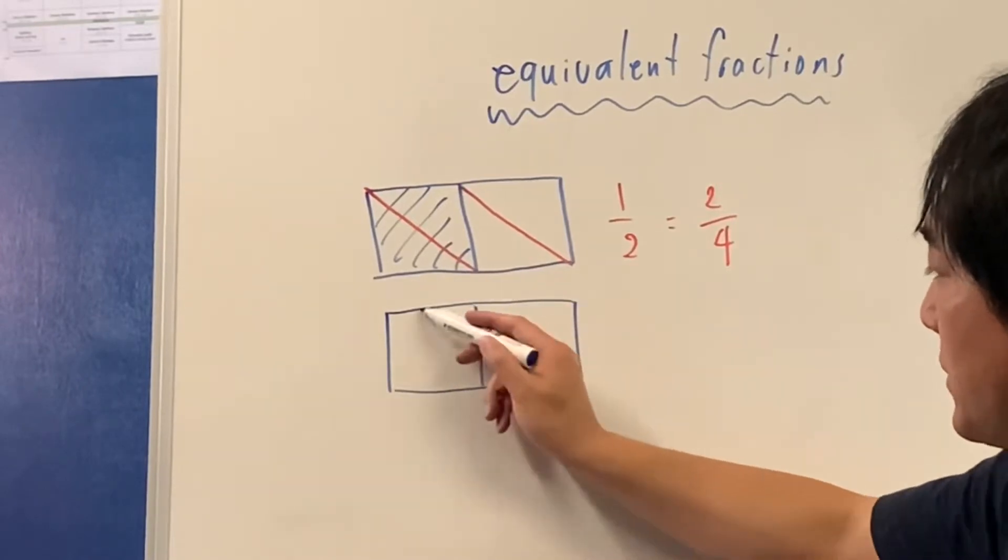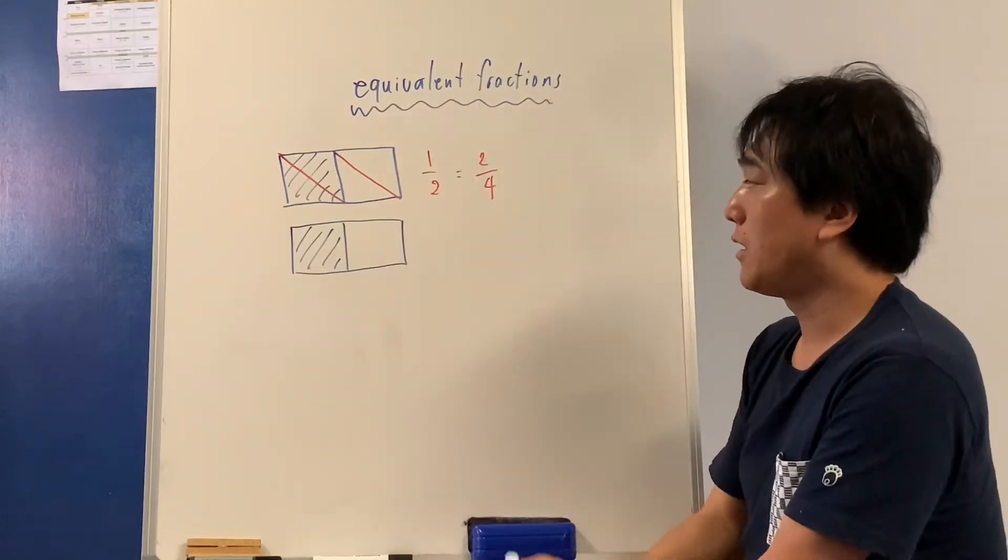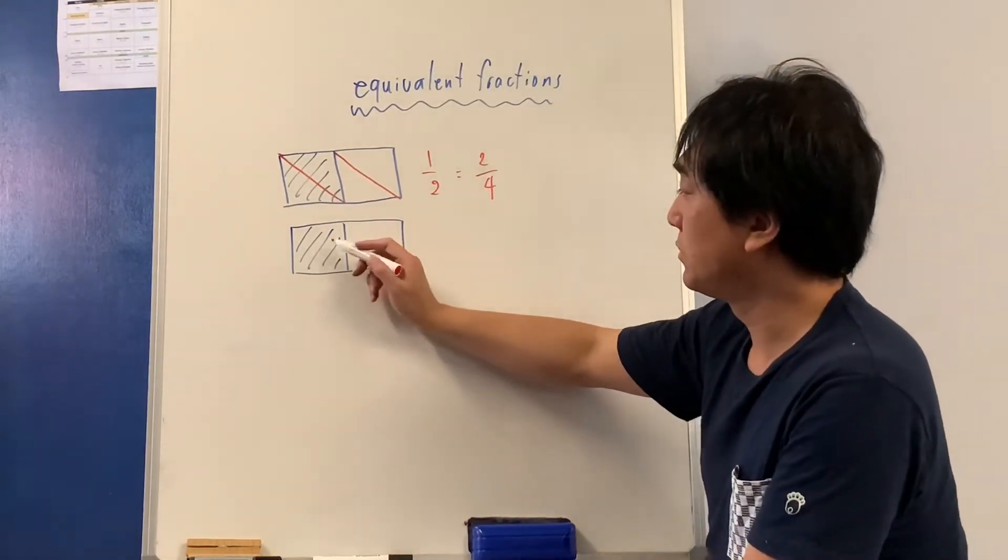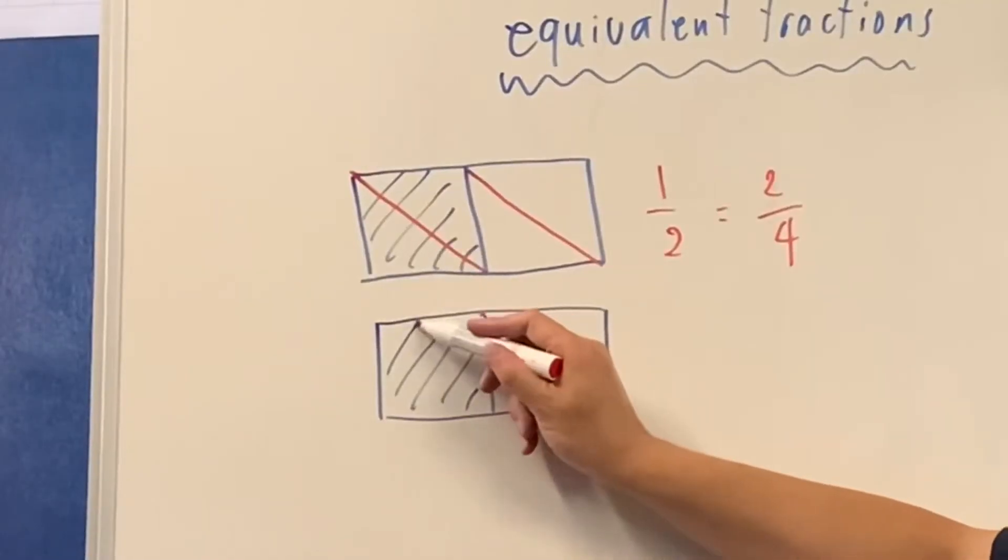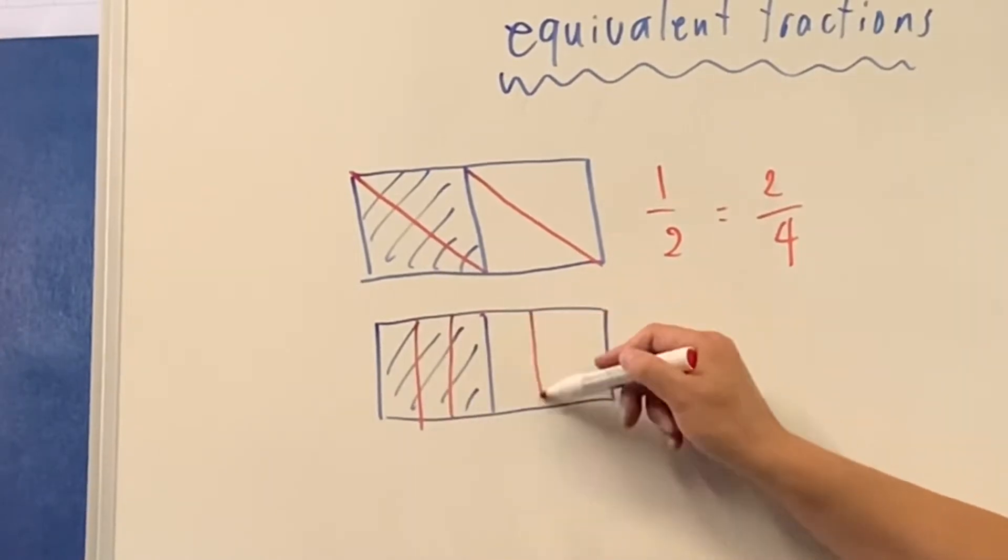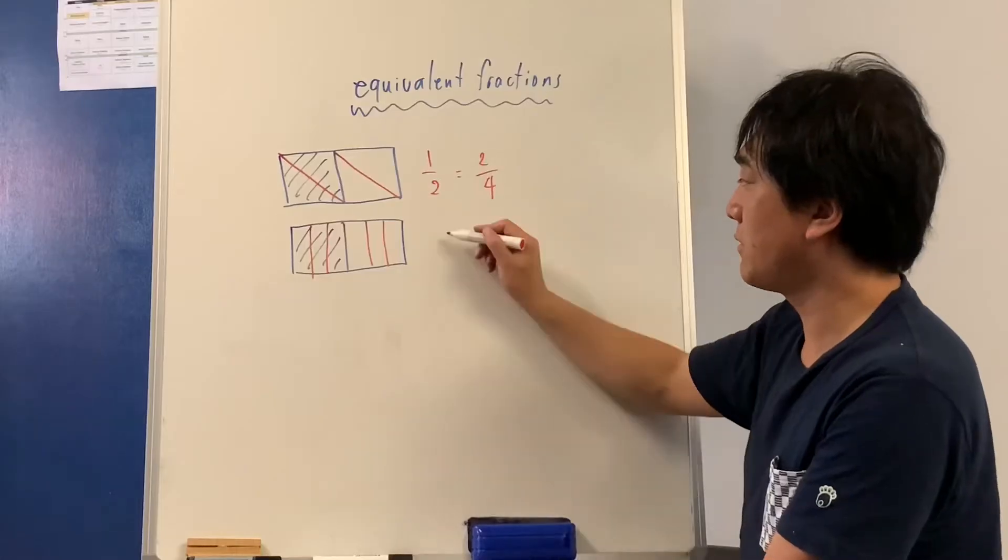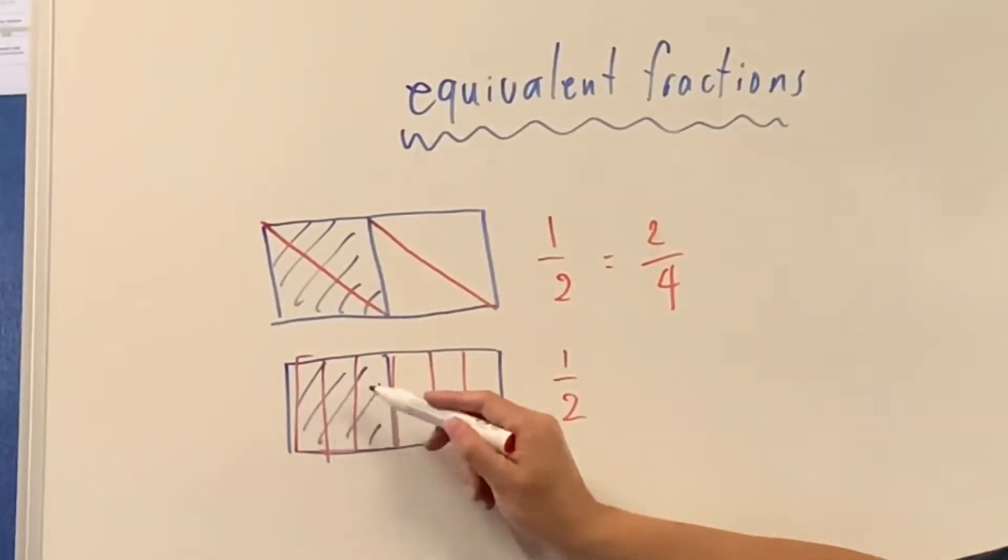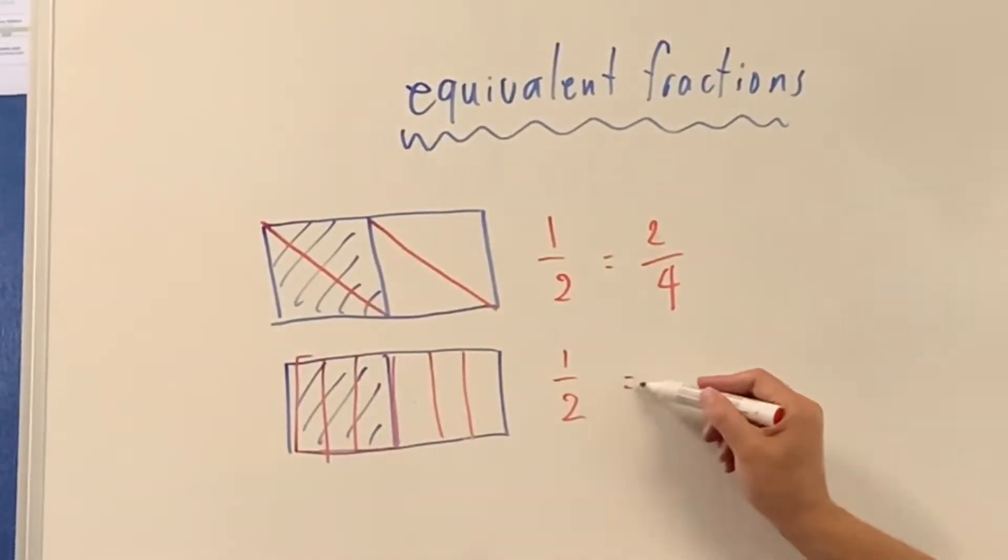Here's one half. I cut each piece into three equal pieces. Now one half suddenly becomes one, two, three, four, five, six... three sixths.